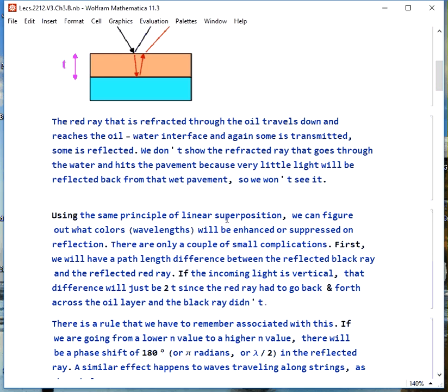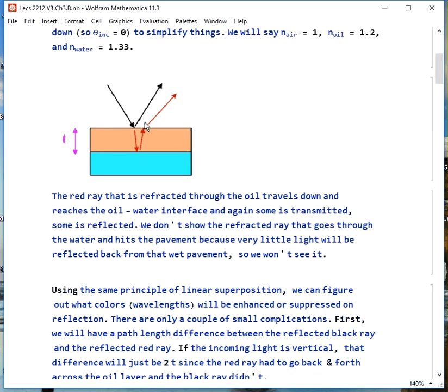We're going to use the principle of superposition again and see that if we're going to have constructive interference here, then the extra path difference has to be a whole number of wavelengths. We'll get destructive interference otherwise.